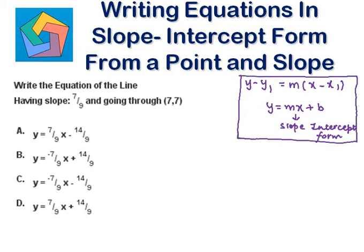So we have (7, 7) — this is x1 and this is y1. Let's use the formula: y minus 7 is equal to m, which is 7 over 9, times x minus 7.